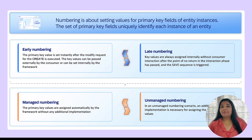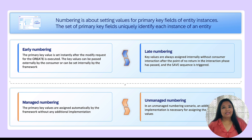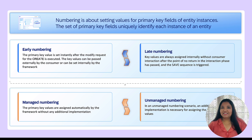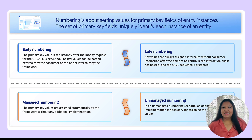In the early numbering scenario, the primary key value is set instantly in the transactional buffer after the modify request for the create action is executed. There can be two possibilities. One is when a customer passes the key value, which is called external early numbering. In this scenario, it must be ensured that the primary key value given by the consumer is unique, because new instances with an already existing primary key value will be rejected during the save sequence. We also have to make sure that the primary key fields are not read-only at create. The second option is when the framework assigns the primary key value when creating the new instance, and then it is called internal early numbering.